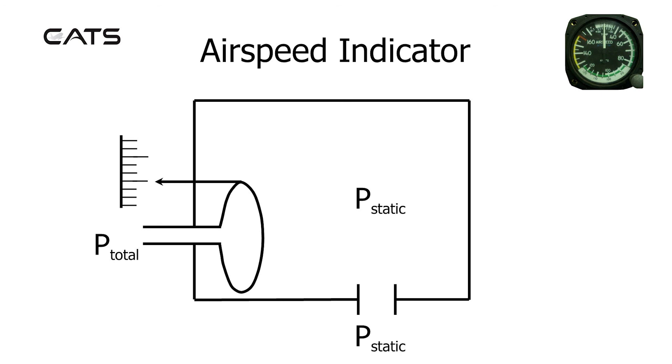In terms of a diagrammatic representation, it essentially looks like an altimeter with a box with static pressure on the outside and inside acting on a capsule attached to a linkage which provides a reading on a scale. The only difference really is that total pressure now goes to the inside of the capsule.